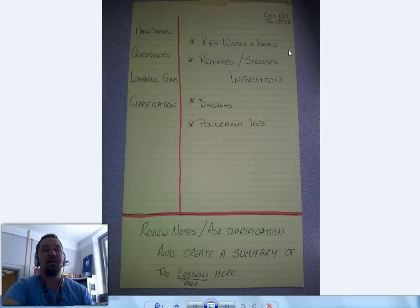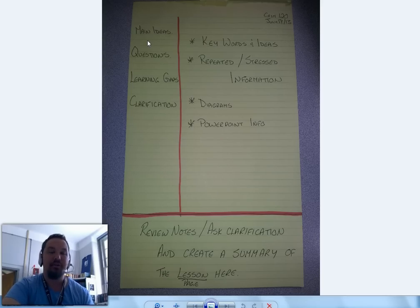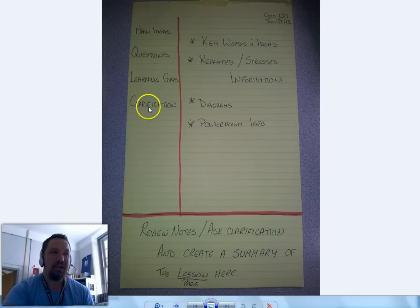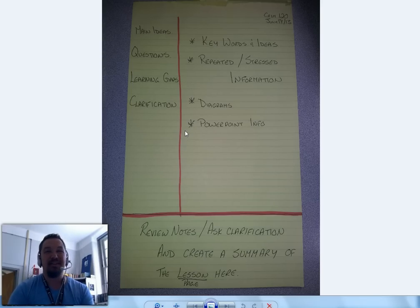Again, the Cornell method — keywords and ideas, repeated or stressed information, diagrams, PowerPoint info — you want that in the larger section. Your main ideas, so the overarching main idea is sort of like your topic sentence if you were writing a paper about that lecture. Questions where you see gaps in your learning, things you need to clarify, write those in the smaller column.